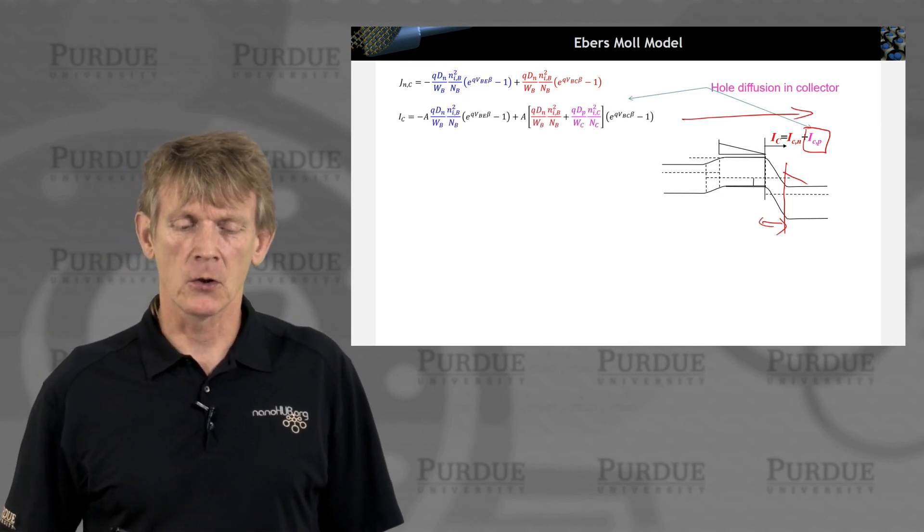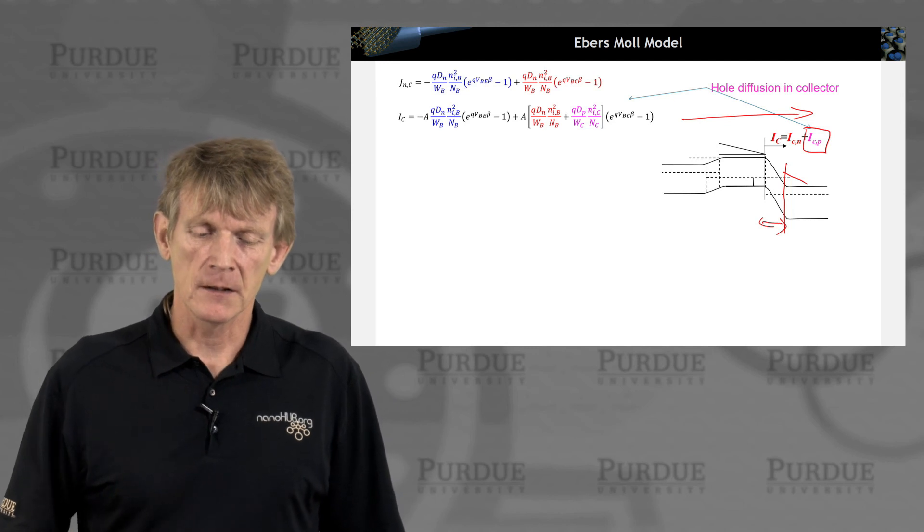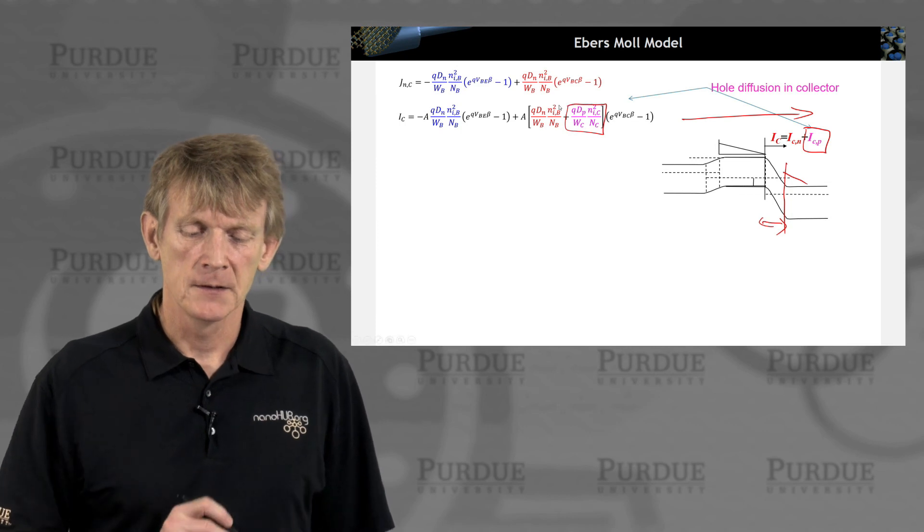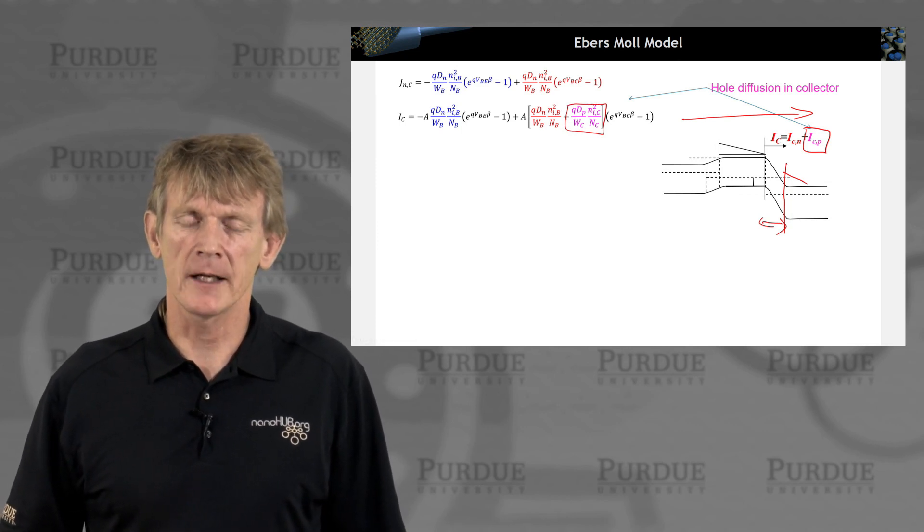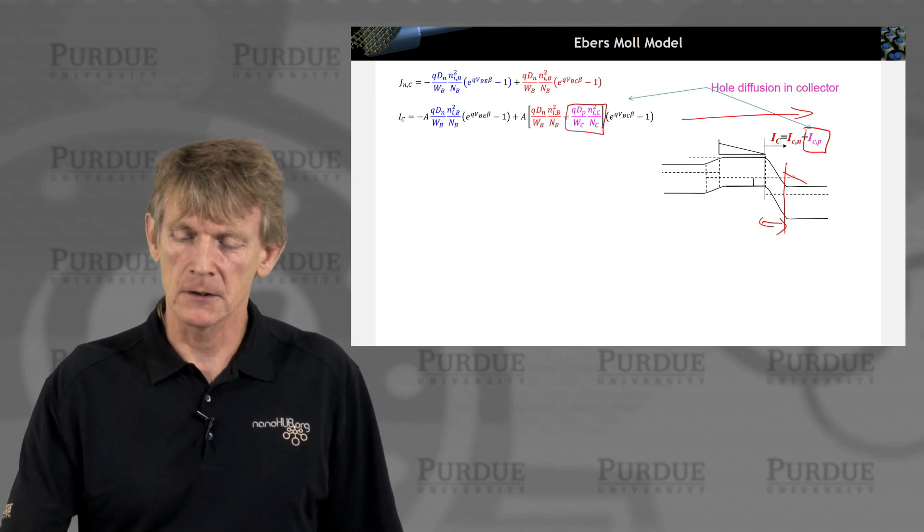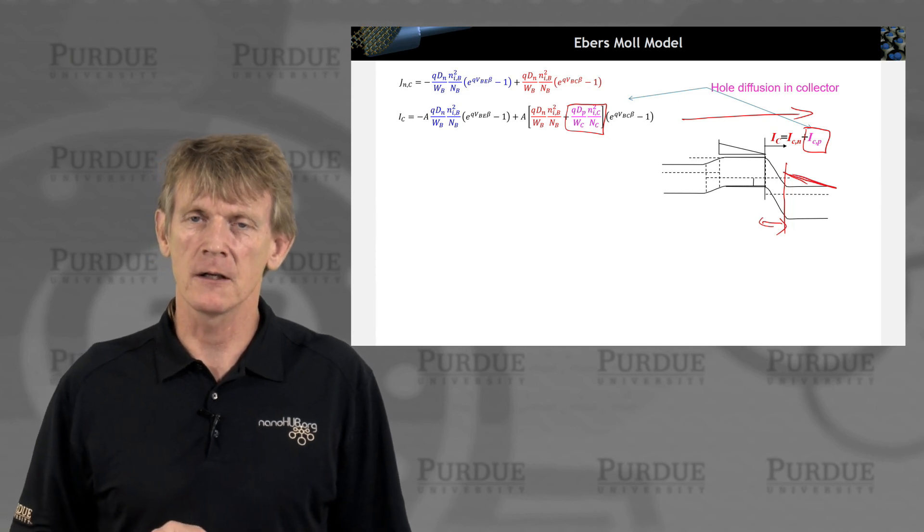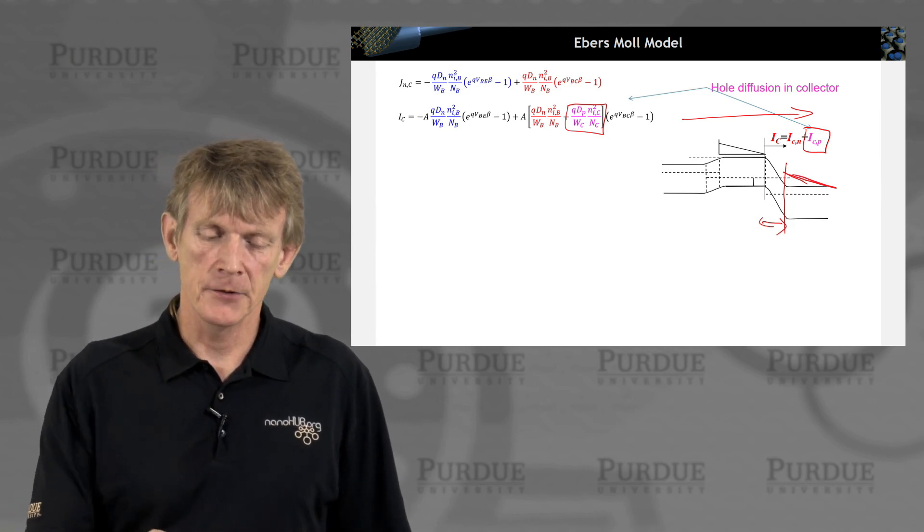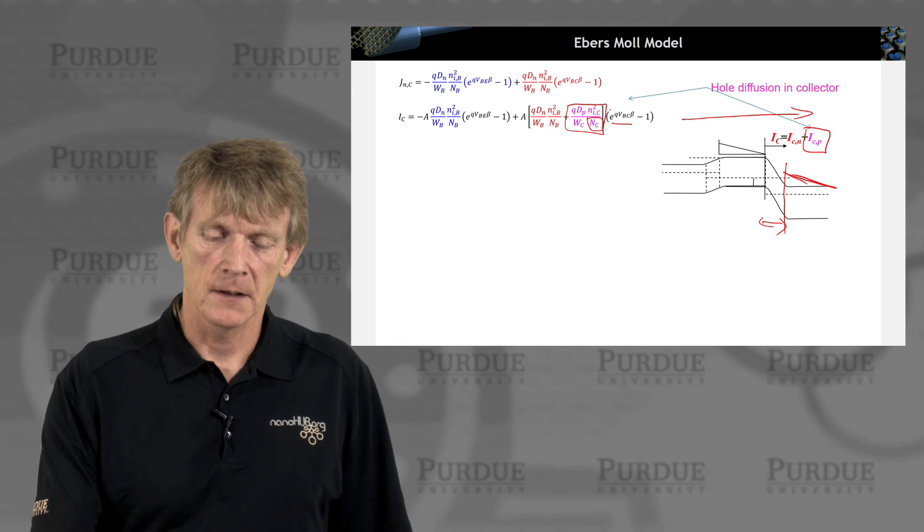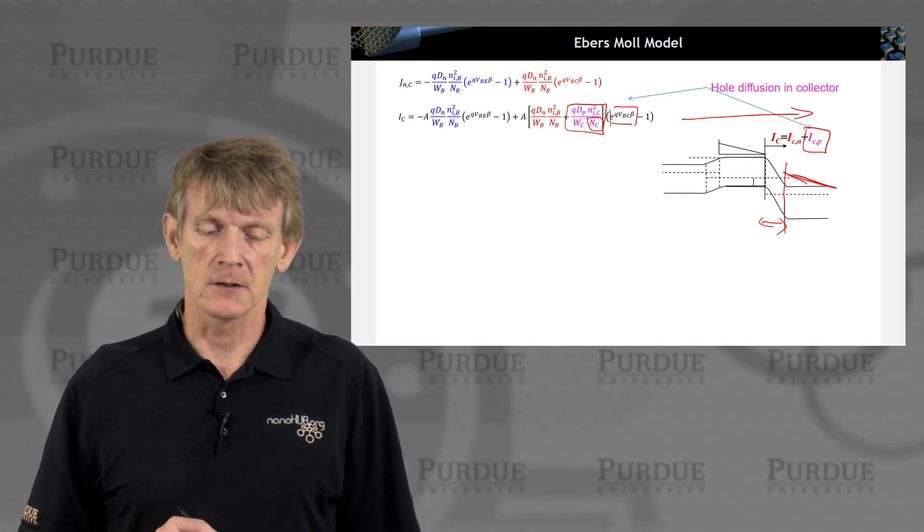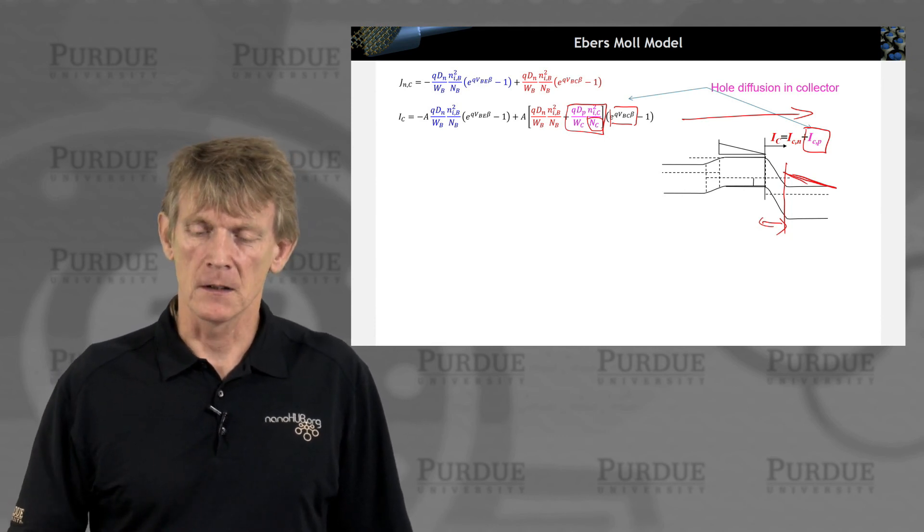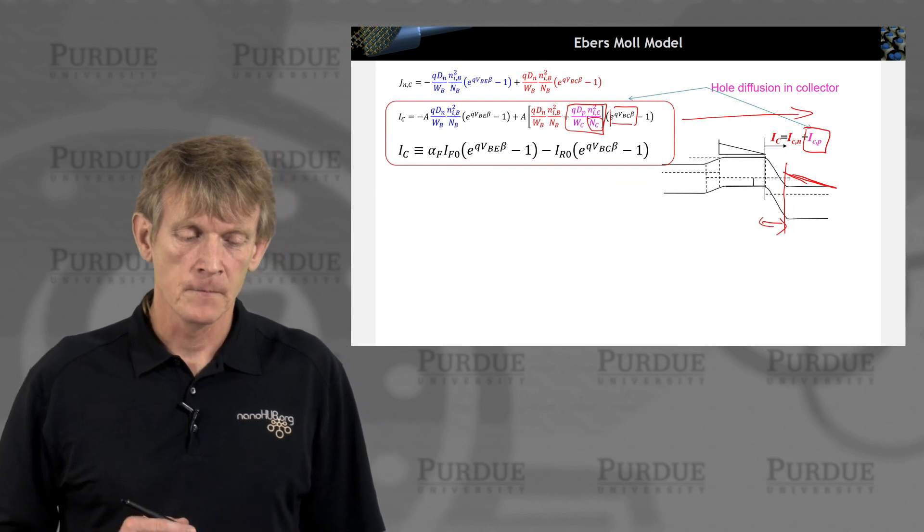Okay, so there's hole diffusion in the collector. And we have done this before for the P-N diode. So you now have an additional term that depends on the diffusion coefficient in the collector, the depletion region width of the collector, because the carriers decrease or decay over this region here if you don't have recombination. And you have the collector doping. And it goes with the base collector exponential in a bias in the exponential. So it's similar to what we had on top, but we add the hole diffusion in the collector.